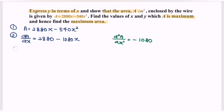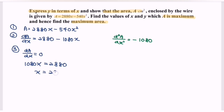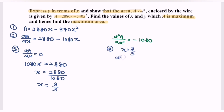To find the critical value, we set dA/dx equal to 0. Substituting: 1080x equals 2880, so x equals 2880 divided by 1080, giving x equals 8 over 3. Testing this value in the second derivative: when x equals 8/3, the second derivative equals negative 1080, which is less than 0, confirming that x equals 8/3 is a maximum.